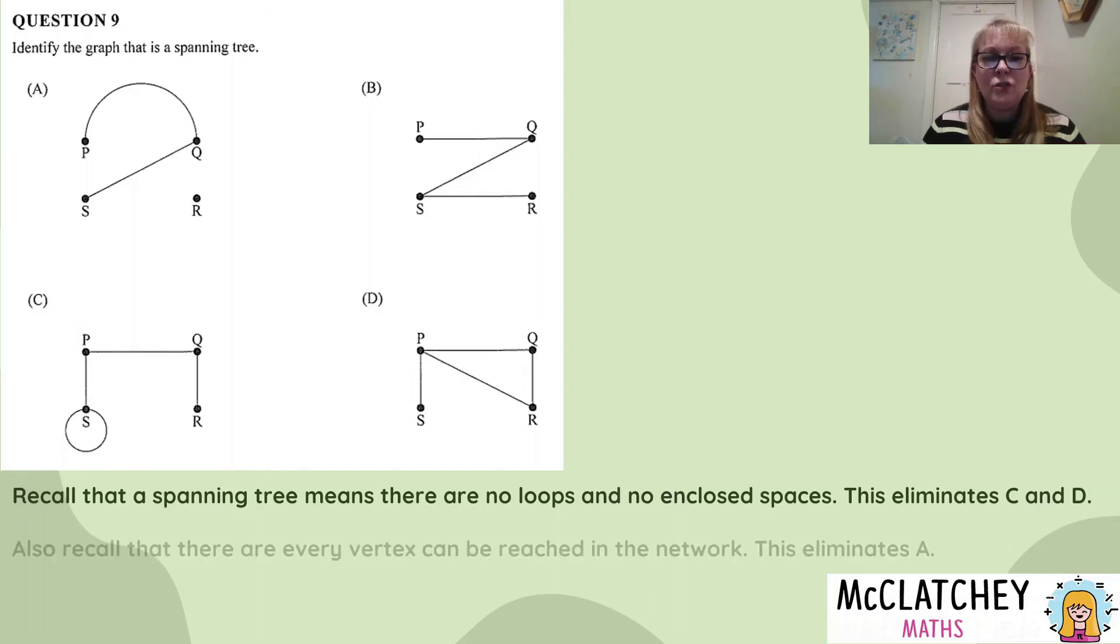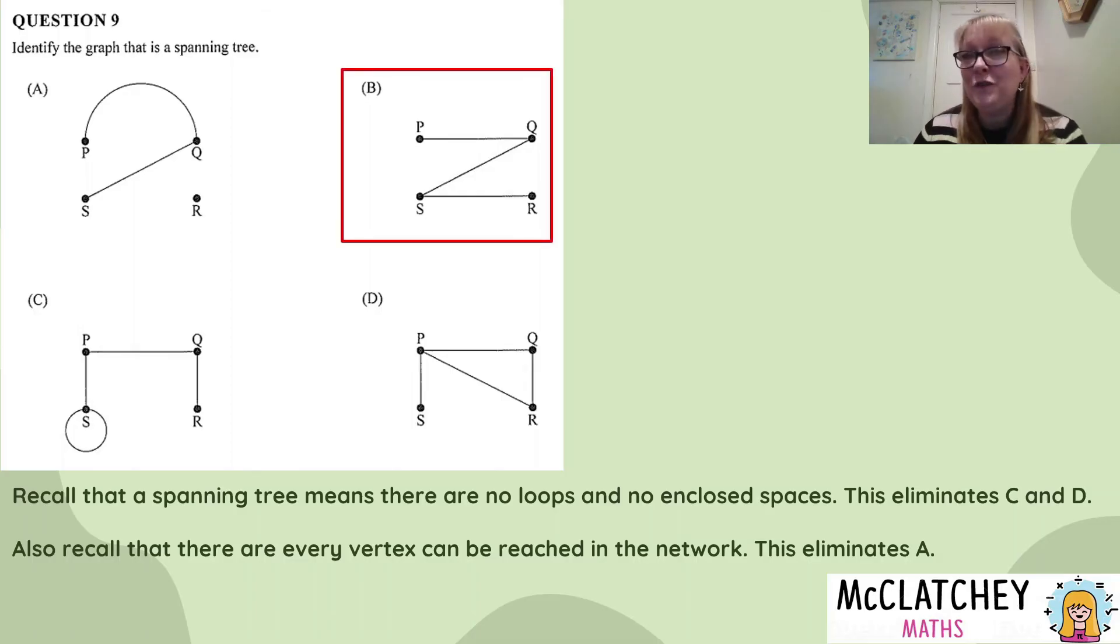What else do we know about spanning trees? We know that we have to be able to get to every vertex in the network. If we look at A, we've got R, a vertex sitting out all by itself, it's disconnected from the network. It's not a spanning tree because we can't get to it. Whereas B, we can actually reach every point in the network with no loops and with no enclosed spaces. So that means B is the correct answer.